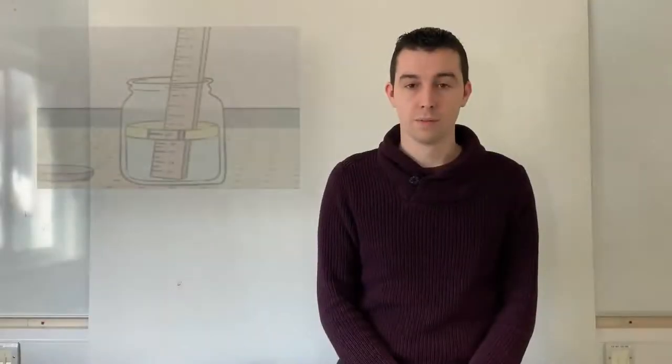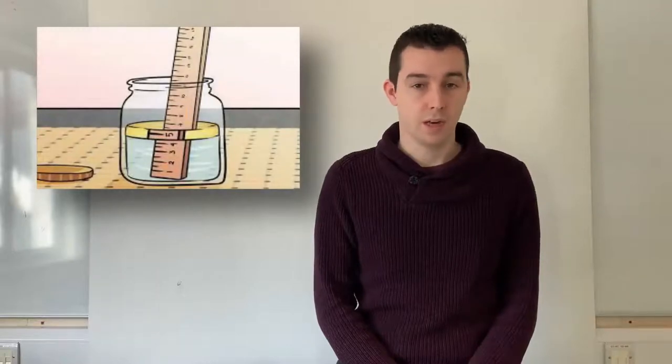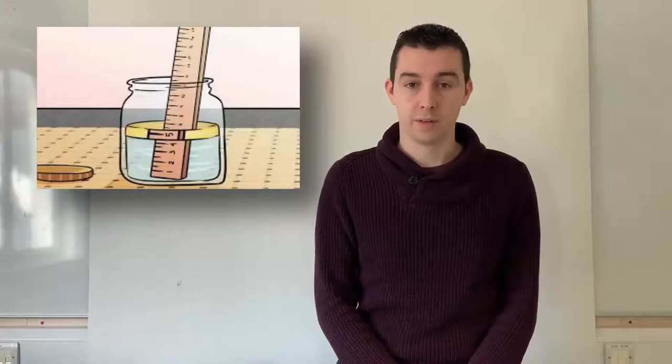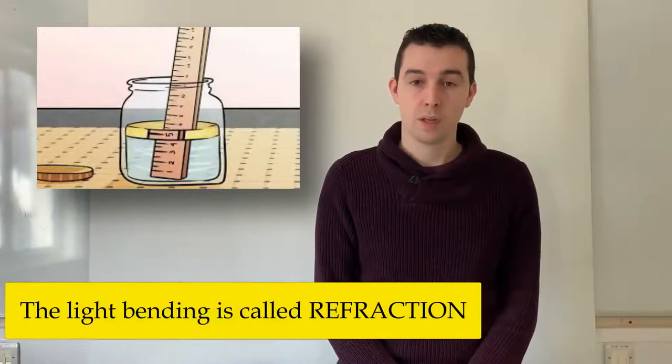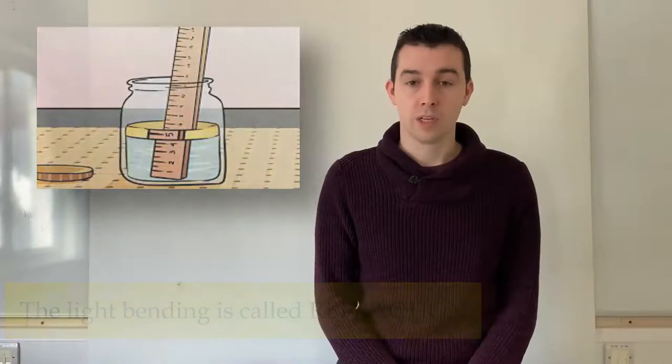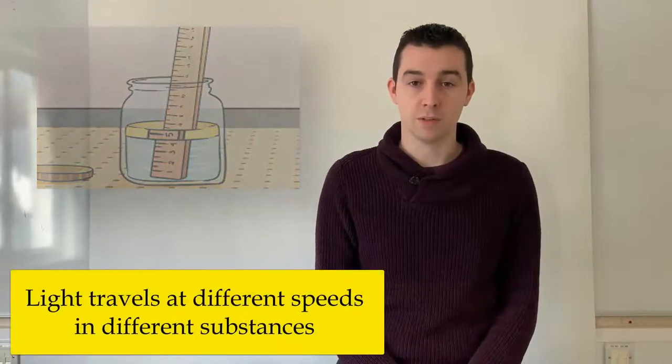However, if light travels through a different substance, for example, air to glass or water to air, it will bend. This bending is called refraction. This bending occurs because the light travels at different speeds in different substances.